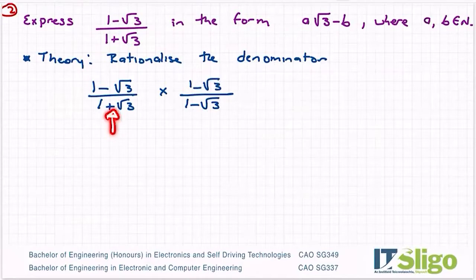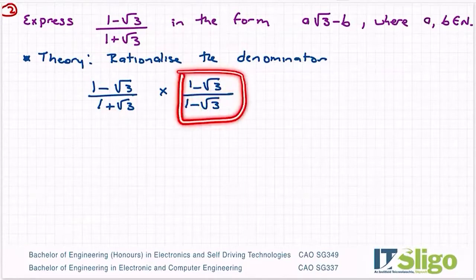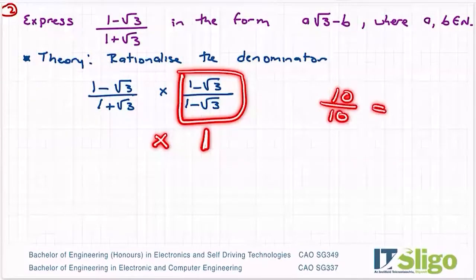So what we do is we change the sign in front of the irrational element. So instead of a plus, it's a minus in this one. What we do to the bottom, we must also do to the top. The reason we do that is that number means you're essentially multiplying by one. Any number over itself is one.